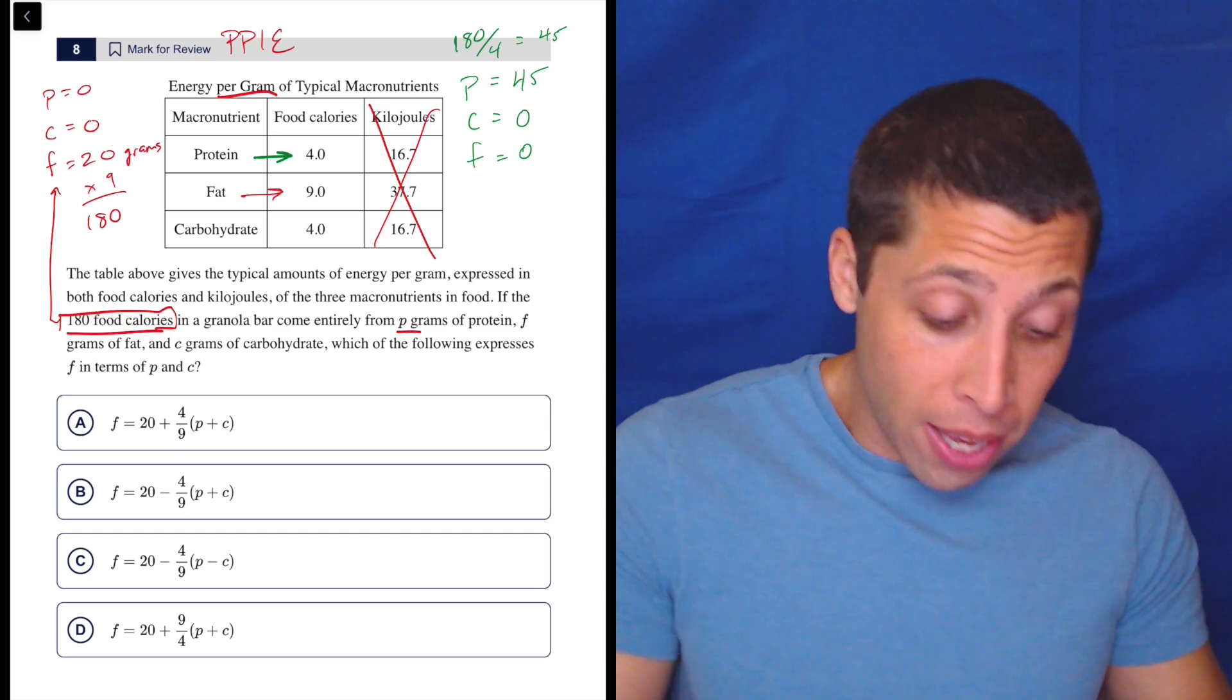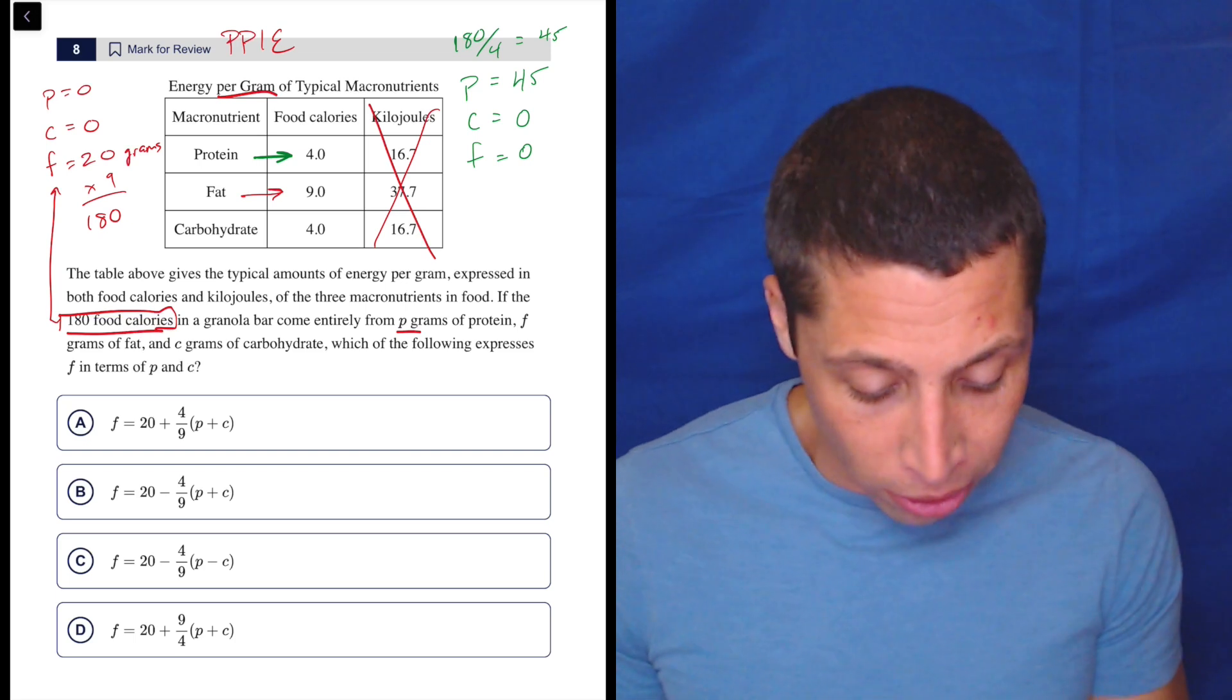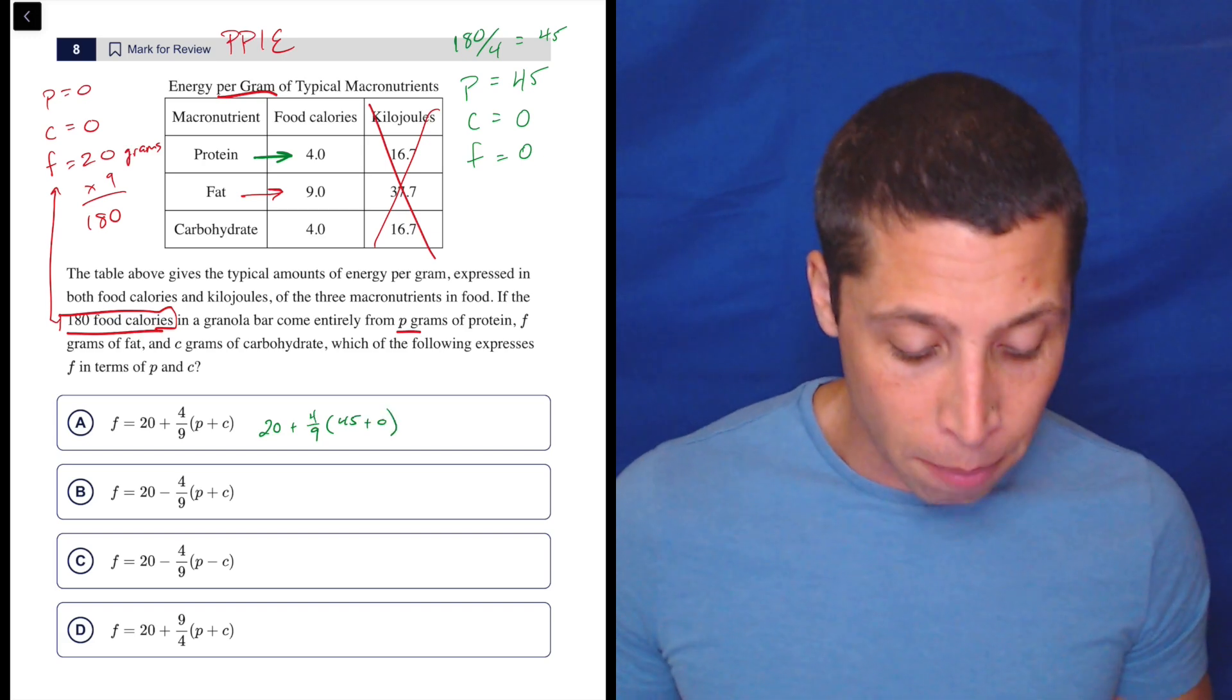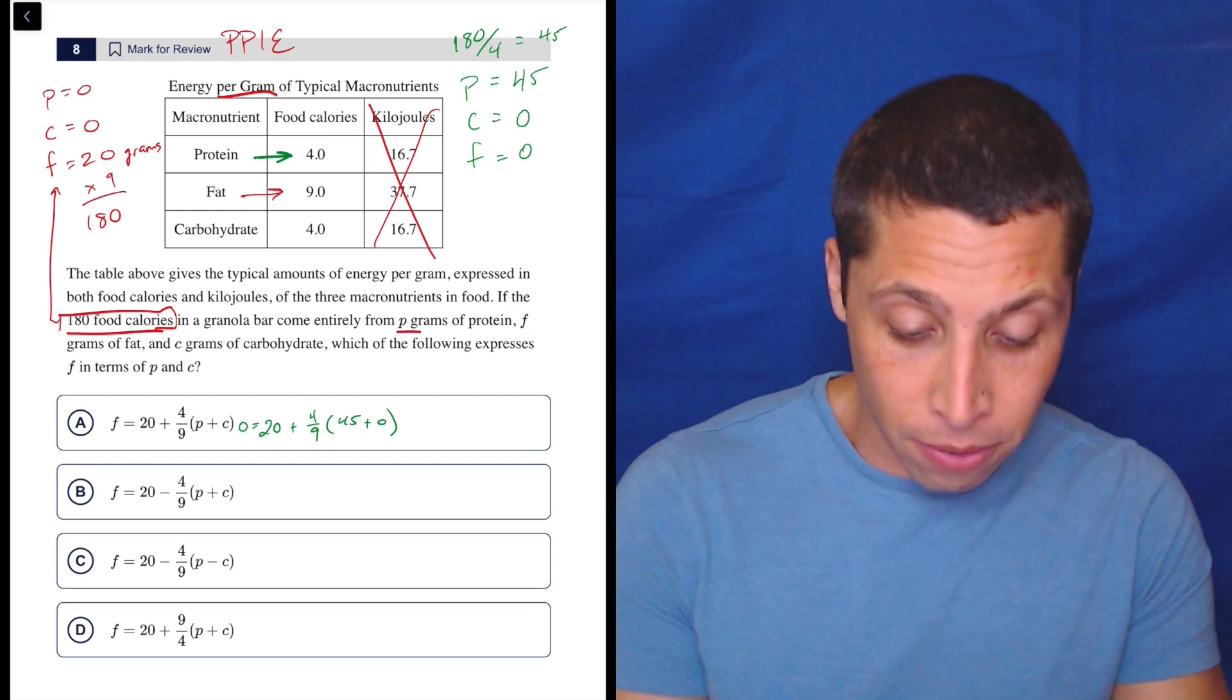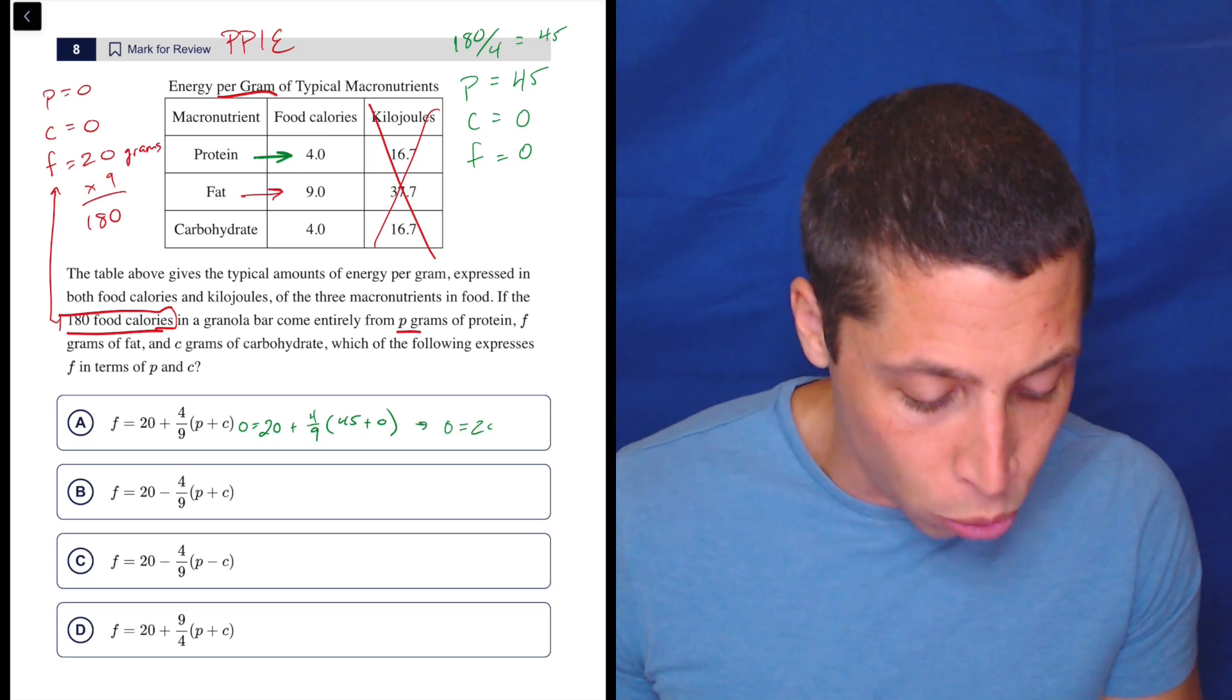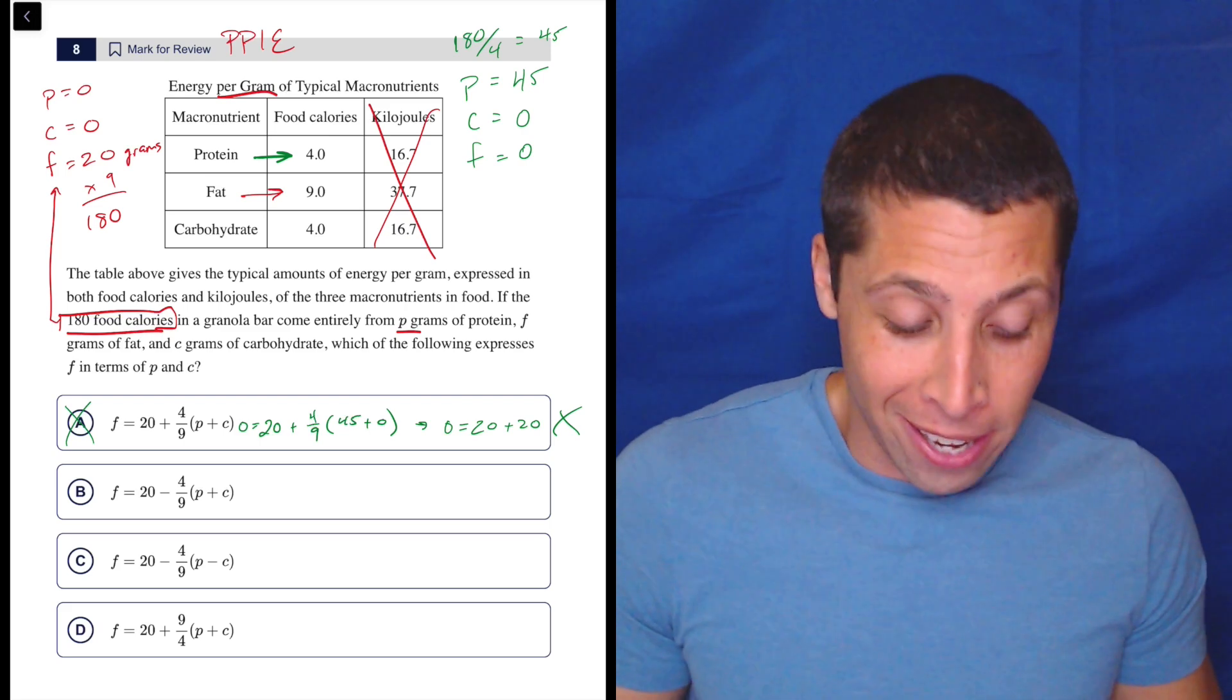So if I put 45 in for P, I should get zero out, right? Cause now I have three points that I'm plugging into these equations and in theory, it should create a good result. So let's do it with these choices. So 20 plus four ninths of 45 plus zero. So I'll skip some of these steps eventually, but that's supposed to equal zero, right? Cause that's the F. So that's supposed to equal zero. So what is four ninths times 45? Four ninths times 45 is 20. So this is telling me if I rearrange this, that zero is equal to 20 plus 20. It's not. So this equation doesn't work. I might not know why, but I don't care why it doesn't work.